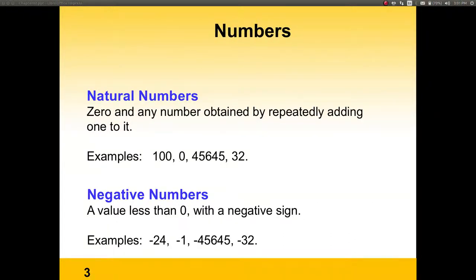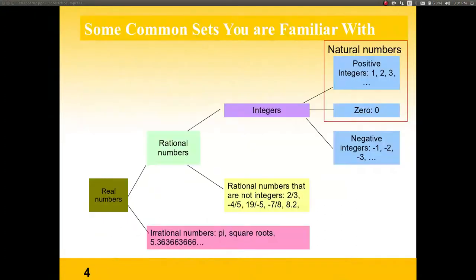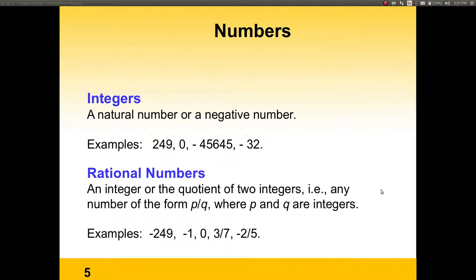To start with, everybody knows what a natural number is. It's basically zero and any number obtained by repeatedly adding 1 to it — usually positive numbers. On the other end, we have negative numbers, which are whole numbers less than zero. So basically, integers are made out of natural numbers, the number zero, and negative numbers. And that's what we're going to be dealing with in this chapter.